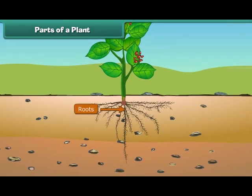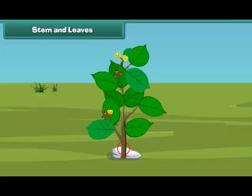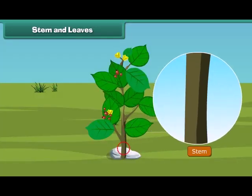Roots are the lower part of a plant. They grow in soil and help the plants to get water and minerals from the soil. The next part of a plant is the stem. A stem is the hard part of the plant which grows above the ground. It bears leaves, fruits and flowers. A stem also supports plants.